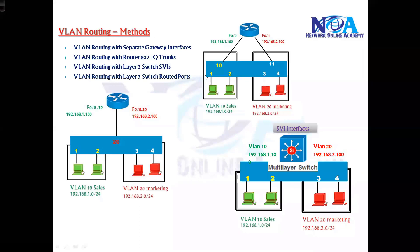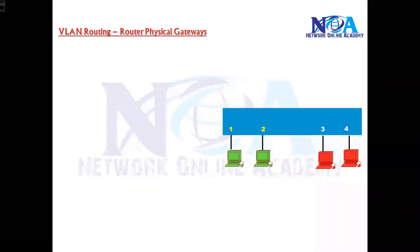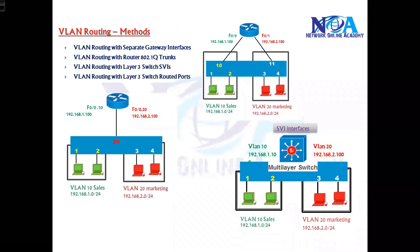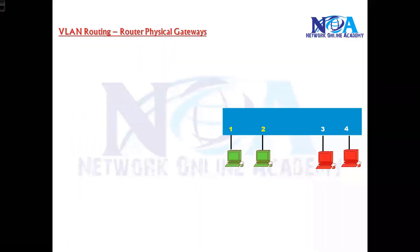The first method will try to understand WLAN routing with separate gateways. This is typically called a legacy method — not really used because there are some limitations and drawbacks we'll see later. But to understand the concept of VLAN routing and how routing works generally, this is a really good option even though it is a legacy option.